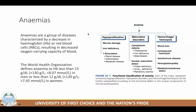Anemia can have three main functional classifications in terms of source. It can be hypoproliferative, meaning there's bone marrow damage and not enough red blood cells are being produced. It can also occur from iron deficiency, where less hemoglobin is being made in the bone marrow. Those that result from decreased stimulation can include renal disease, inflammatory disease, and metabolic diseases like hypertension and diabetes.